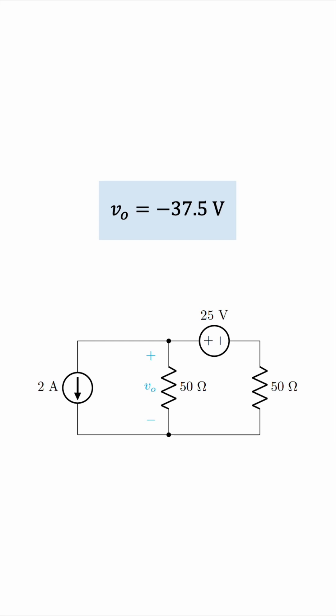Now you may be wondering, is a negative voltage possible? Of course it is. It only means that the polarity we assumed in the circuit labeling is incorrect. So instead of the plus minus you see in the circuit below, it should have been a minus plus like this. But the potential difference, in terms of the magnitude, is definitely 37.5 volts. Could you figure it out?